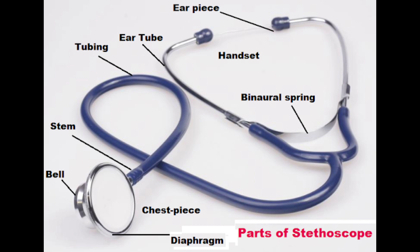The stethoscope is a vital medical instrument used for auscultation — listening to the internal sounds of the body. It is used to listen to the sounds made by the heart, lungs, intestines, and blood flow in the arteries and veins.